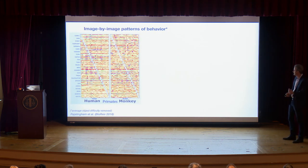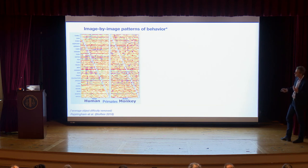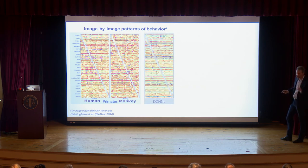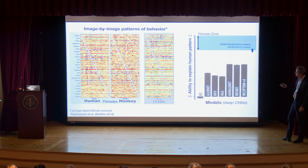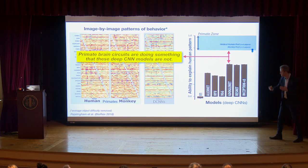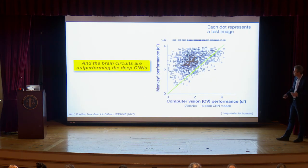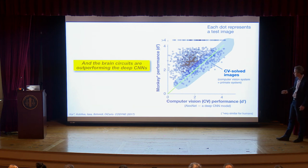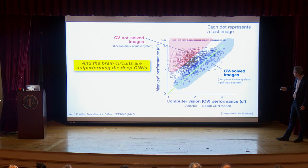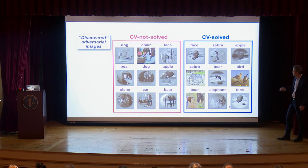Looking at behavioral data at image-by-image resolution, humans and monkeys still look very similar. But deep CNNs — even though they passed our earlier behavioral test — start to fail on these higher-stringency comparisons. All of these deep CNNs are now failing at higher-stringency primate comparisons. These are 'discovered adversarial images' — images where computer vision fails yet monkeys and humans get them right. There's nothing obvious that separates these images, but computer vision fails while primates solve them easily.